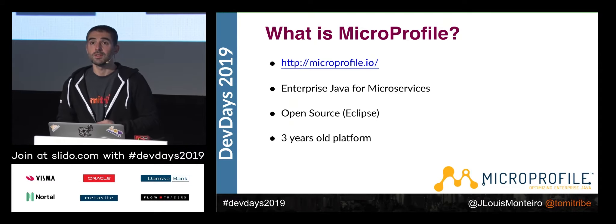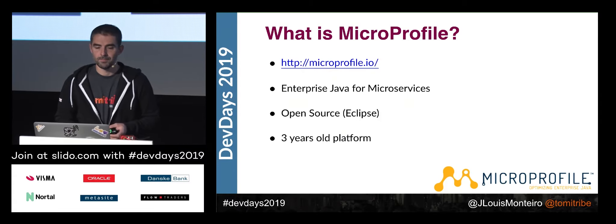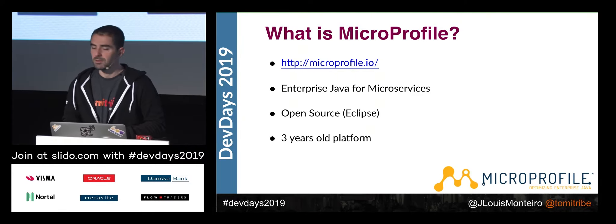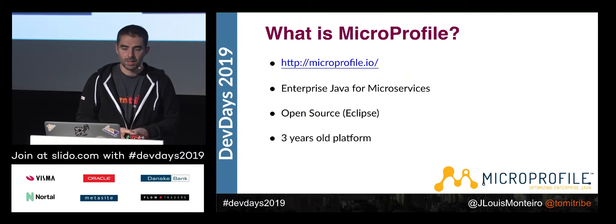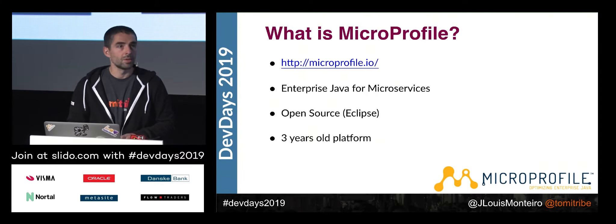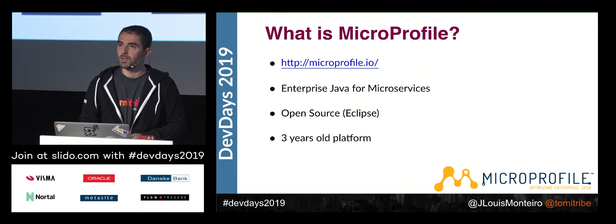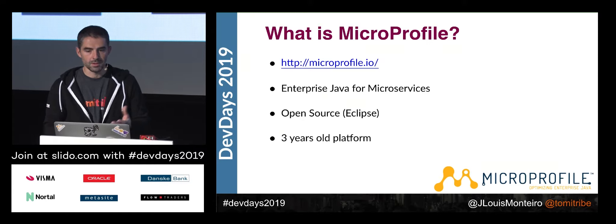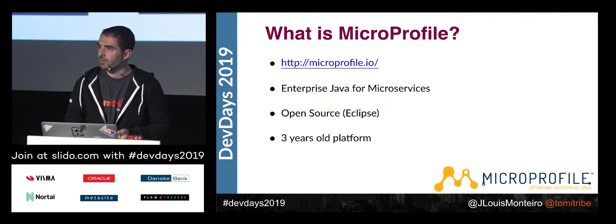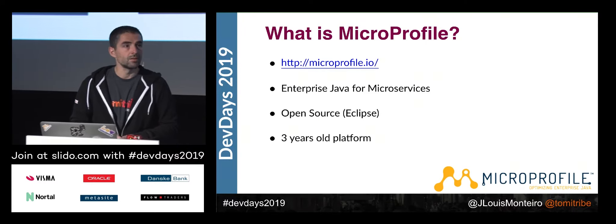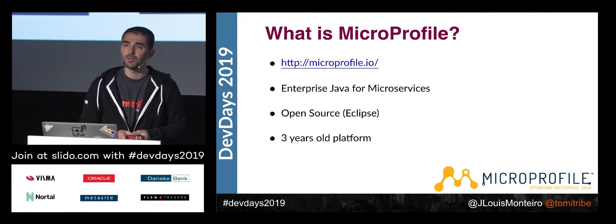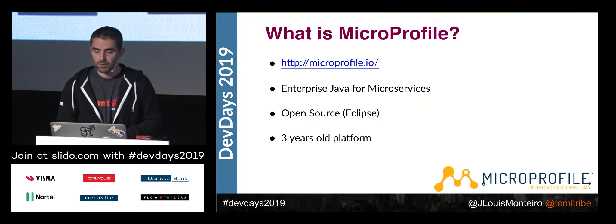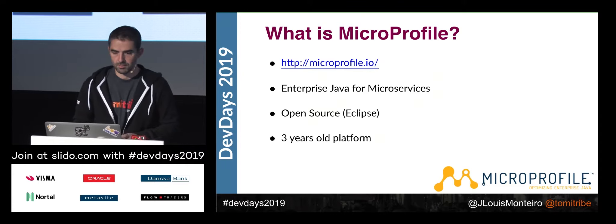So what is MicroProfile? MicroProfile was created in 2016. At that time there was no Java EE 8, we still had Java EE 7, and many big companies like IBM, Red Hat, and TomItribe got together and realized that Java EE did not fit the microservices world — the releases of Java EE were too slow to market. They decided to get together and create a dedicated platform for microservices. It's an open source platform, so if you want to get involved, get in touch. It's now a mature three-year-old platform with about 20 releases, and many implementations you can use.